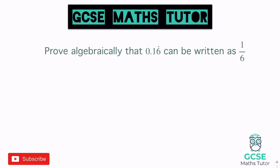Let's have a look at one more. This question says: prove algebraically that 0.16 recurring can be written as 1/6. Prove algebraically means it's important to keep with those algebraic steps. So the same as before, I'm going to write x equals 0.16 recurring, and just remembering it's the 6s there that are recurring.